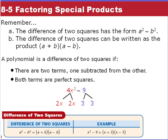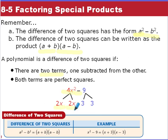Now, remember from Unit 7, the difference of two squares has the form a² − b², and it can be written as a product: (a + b)(a − b). A polynomial is a difference of two squares if there are two terms, one subtracted from the other, and both terms are perfect squares. For example, 4x² breaks into 2x and 2x, and 9 is a perfect square — 3 times 3.